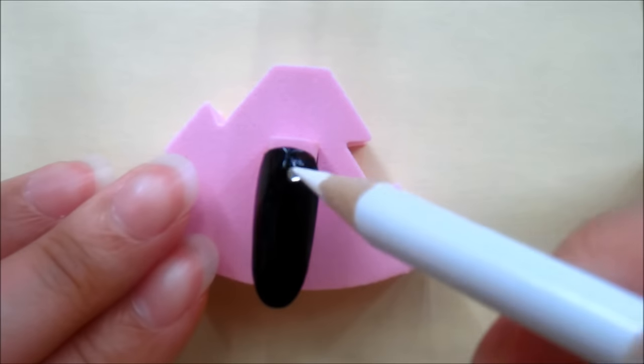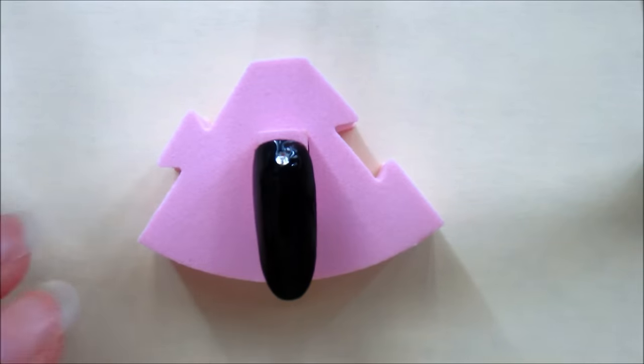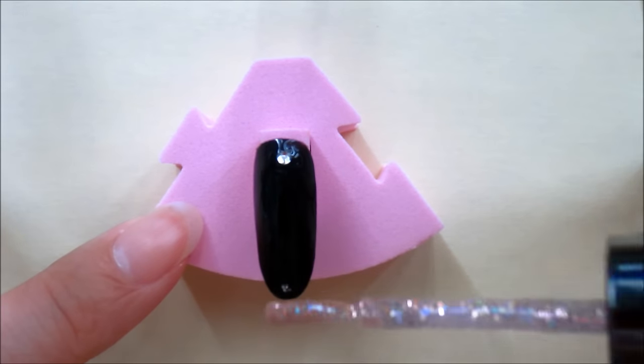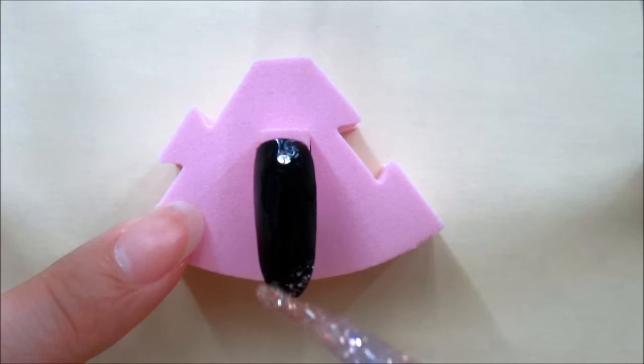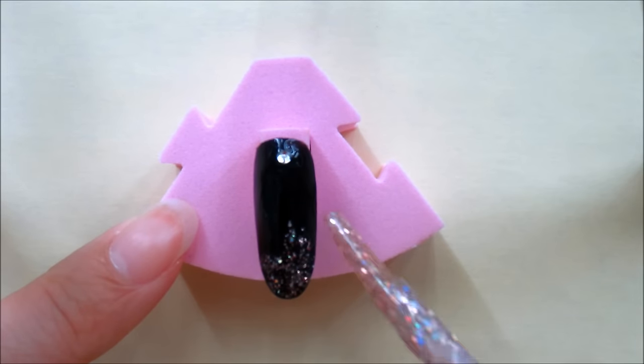For the first design, start off with a black base. Add a rhinestone near the cuticle and make a glitter gradient on the tip of the nail by layering thin layers of the glitter polish.